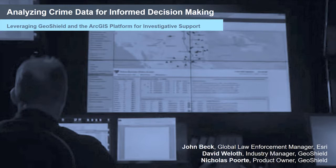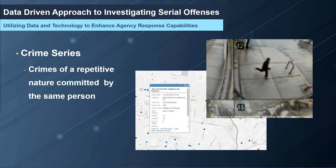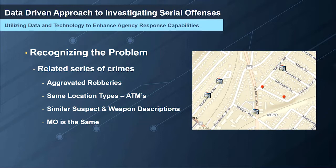For today's presentation we're going to discuss a scenario on how an agency can utilize geospatial technologies to bring disparate data together as part of a data-driven response to a problem. The scenario involves how a law enforcement agency can better respond to a violent crime series — crimes of a repetitive nature committed by the same person or persons. Most people associate these with serial killers, but they can involve other types of crimes.